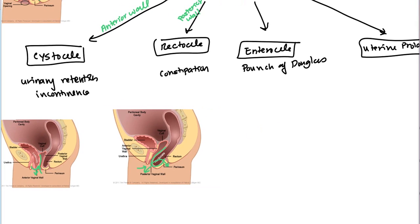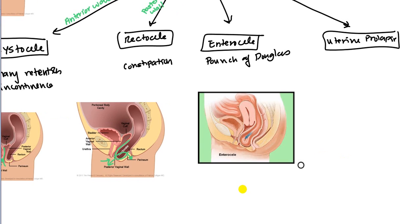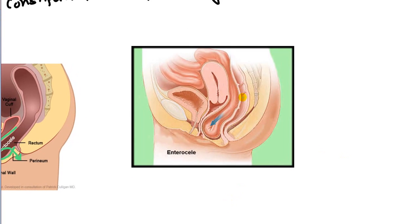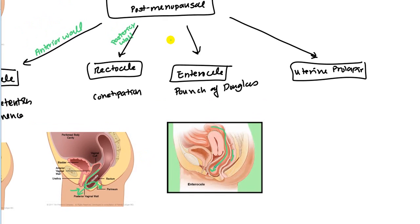In enterocele, we have the actual small intestine protruding through. As you can see, this is the rectum, here we have the uterus, and here we have the bladder. You can see that the small intestine has gone through the pouch of Douglas and come out this way. This is also a posterior protrusion, but the posterior wall is not involved because the posterior wall is actually here. This is the actual pouch of Douglas coming down.